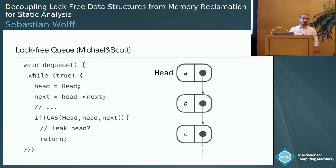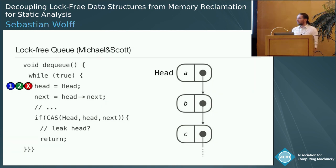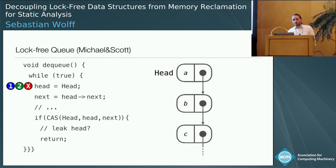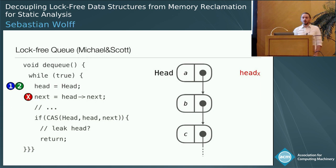With this example, I would like to show you two things: on the one hand, why memory reclamation is not easy in lock-free data structures, and on the other hand, how lock-free data structures work. To do this, I need three threads. Although this looks really complicated, thread X will only be used to show why memory reclamation is not trivial. It will start off by reading out the shared head pointer and having a pointer into the data structure.